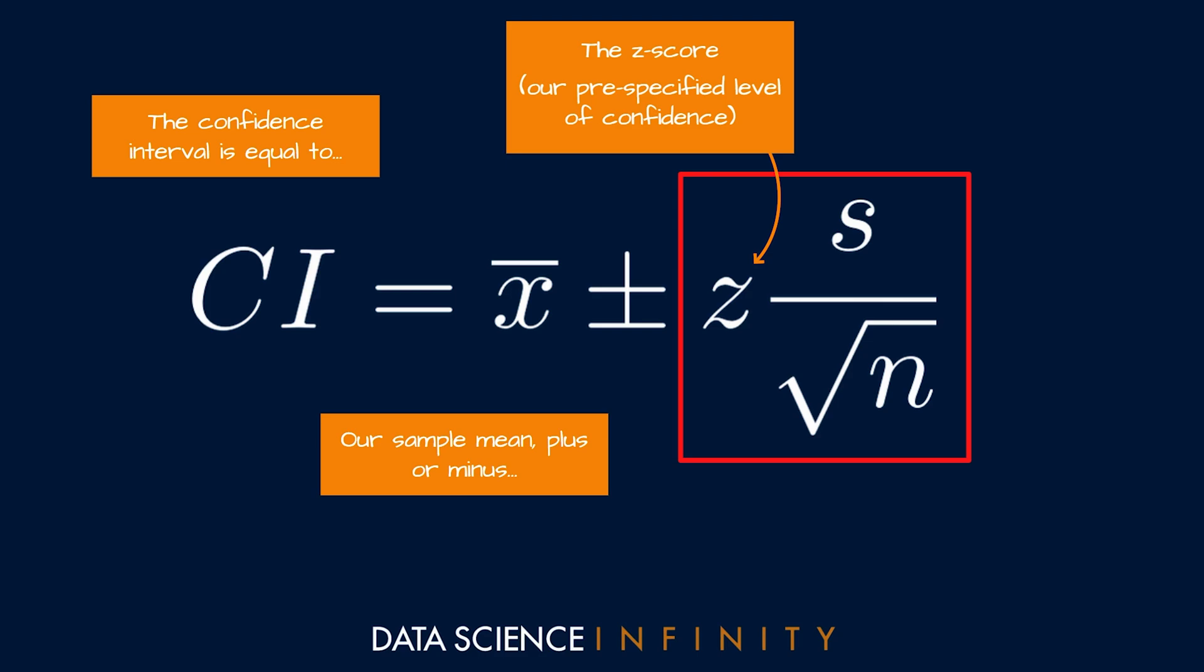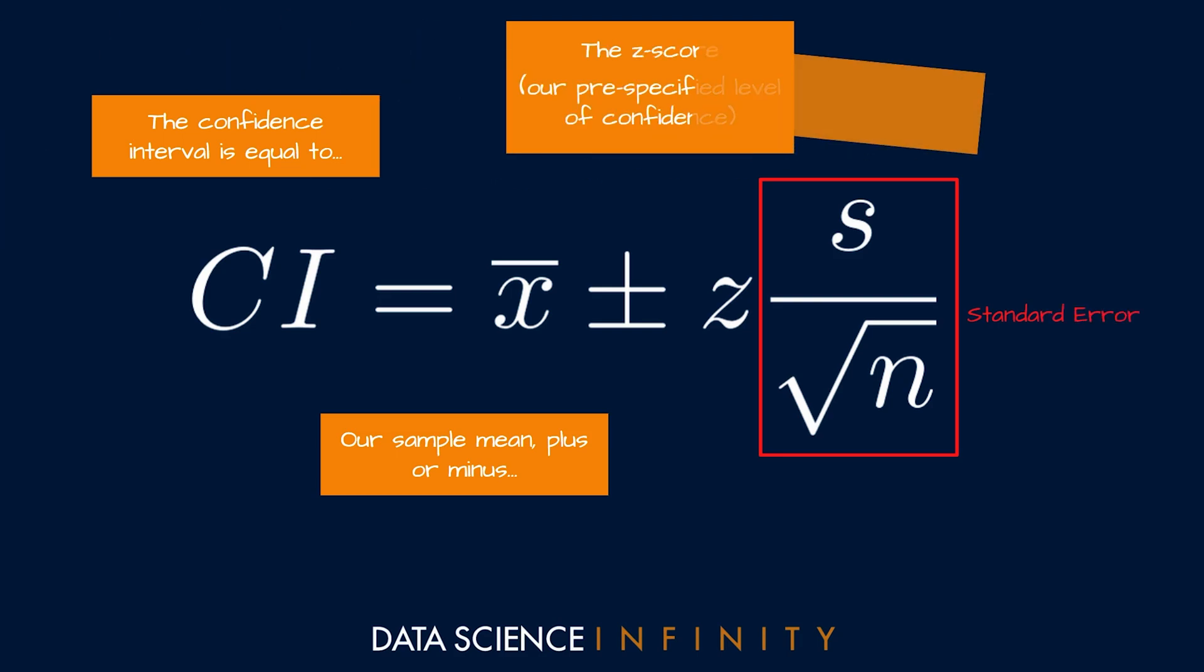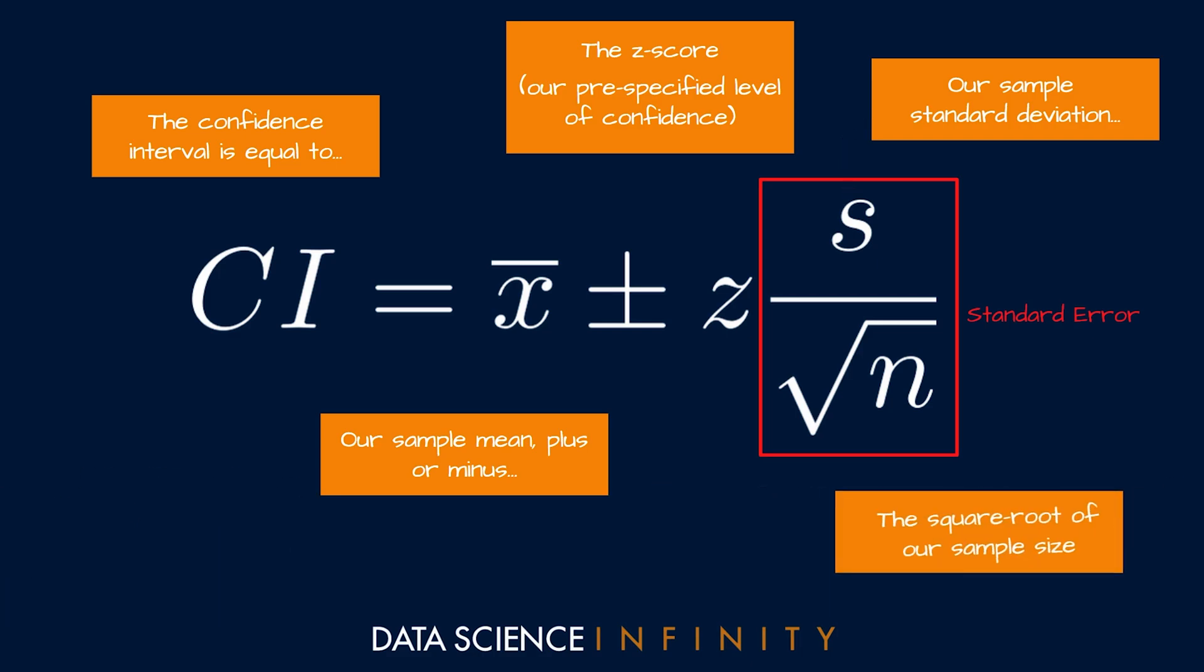The second part of the margin of error is this here known as the standard error and you can see this is calculated by taking s, our sample's standard deviation, divided by the square root of n, our sample size, and this is quite interesting. Along with the z-score that we set, the standard error also determines how wide or how narrow our confidence interval will be.